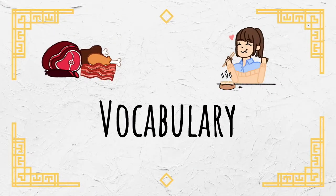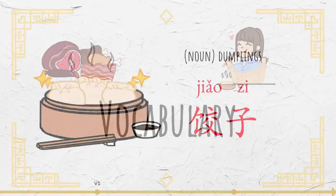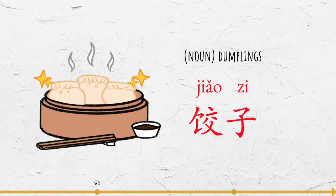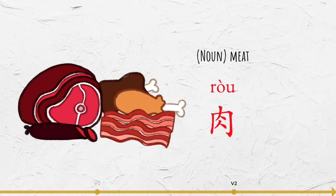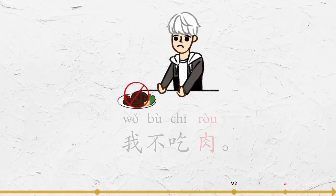Let's first go over some words that you will need for this lesson. 饺子 — 饺子很好吃. 肉 — 我不吃肉.